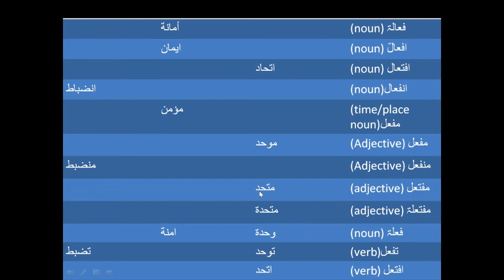The Muf'il scale makes Bahad into Muttahid - meaning that which is getting united, becoming one. Another Muf'il variation again gives something unified. Then the Fi'la scale makes Wahad into Wahda - that oneness or combiningness. We also have Amana, again expressing honesty or integrity. The Tafa'al scale is a verb - Bahad becomes Tawhid, meaning to unite, to make one. Tazabat means to enforce discipline, to regulate a thing, to control something.